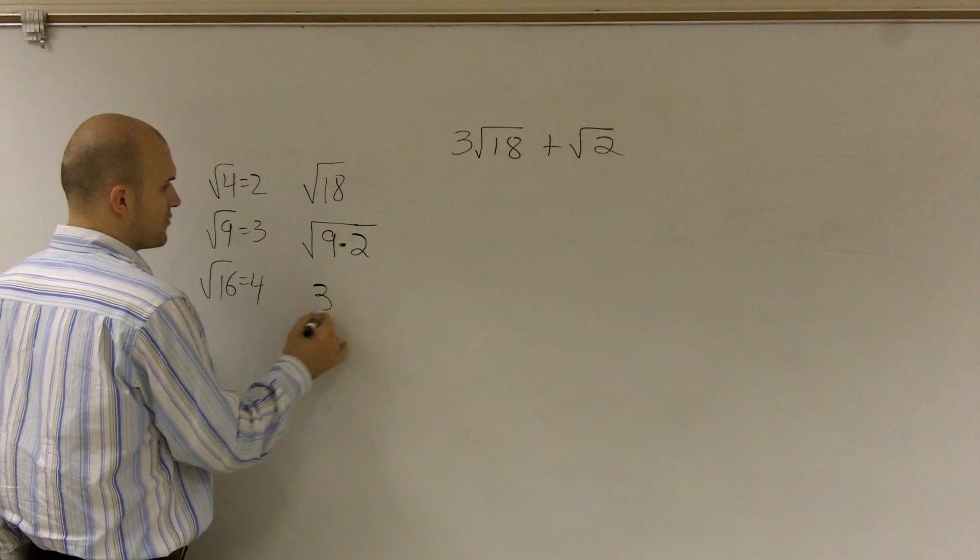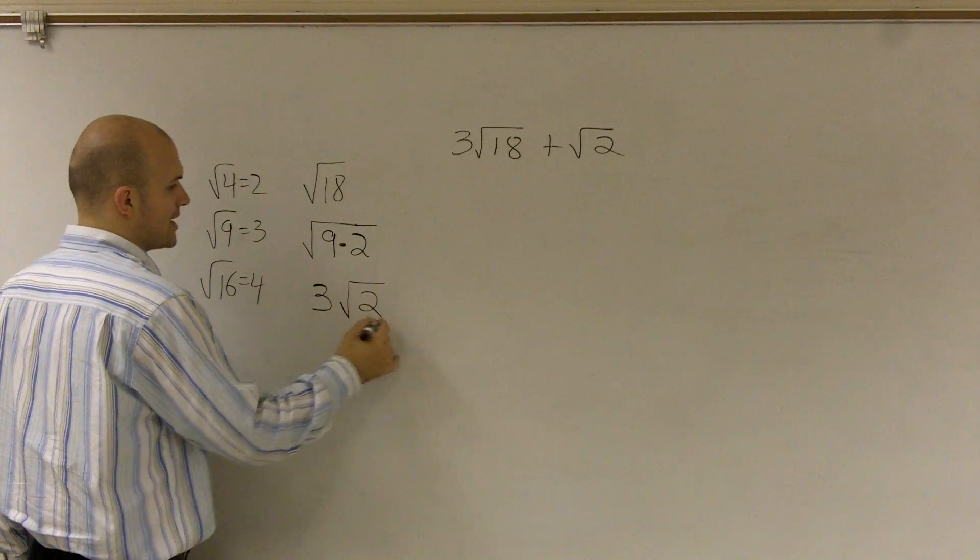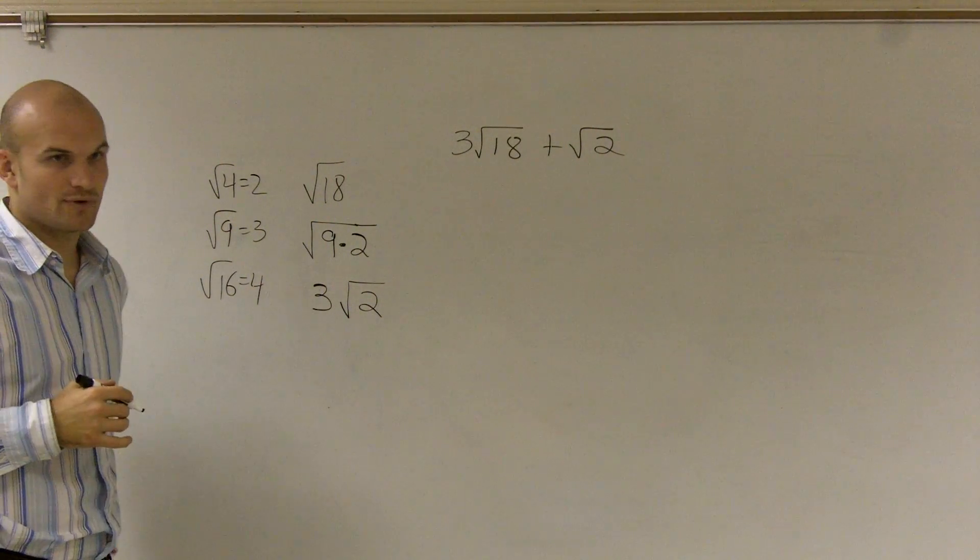The square root of 9 is going to leave me 3. But the 2, since I still can't take the square root of 2, that's going to remain under the radical. So that would be 3 times square root of 2.